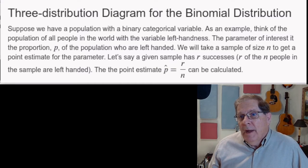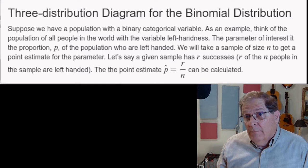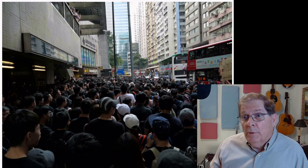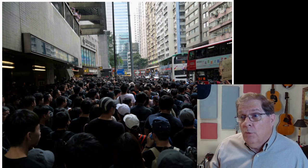Suppose we have a population with a binary categorical variable. As an example, suppose the population is all the people in the world, and the variable is whether individuals are left-handed or not.